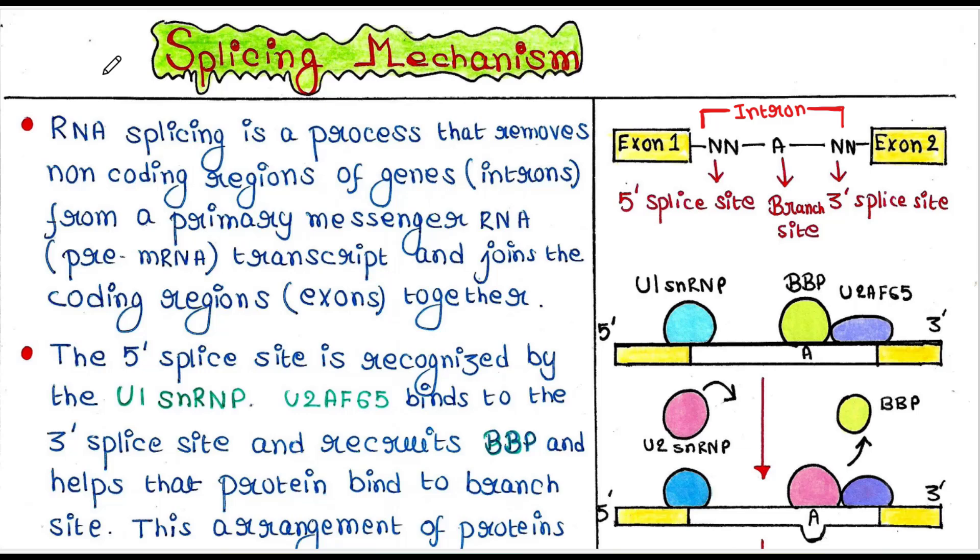So in eukaryotes, once an RNA gets transcribed, it contains both introns and exons. It is called pre-mRNA or primary messenger RNA.